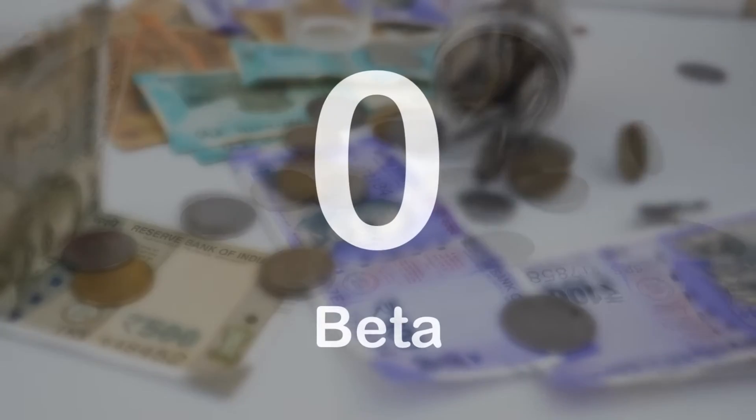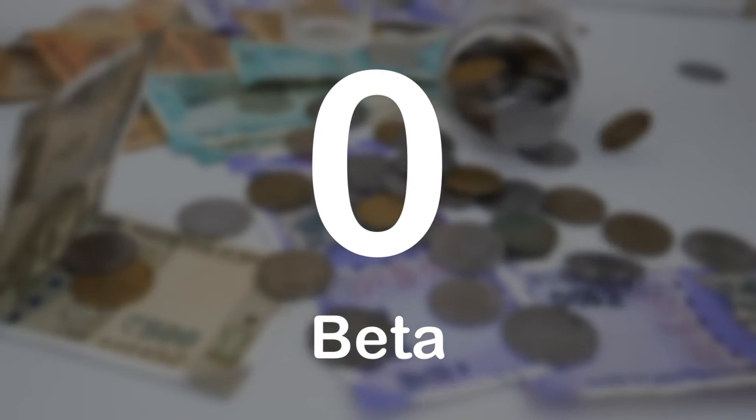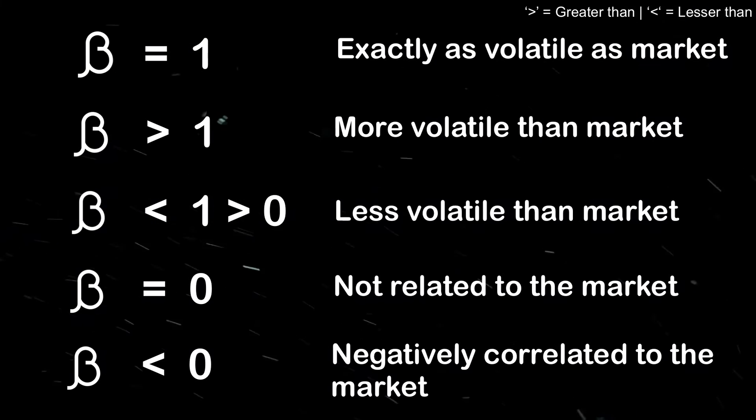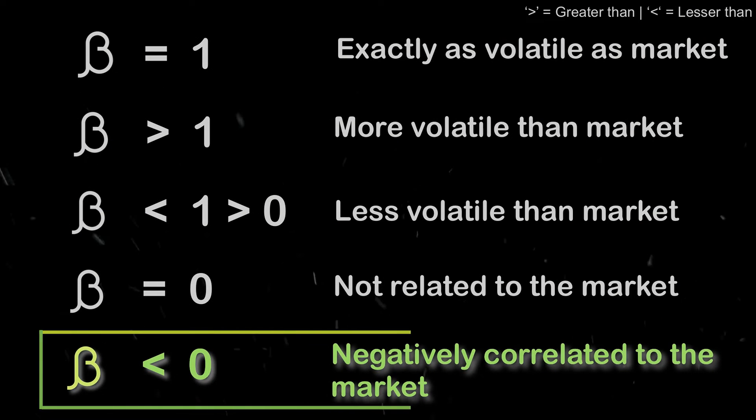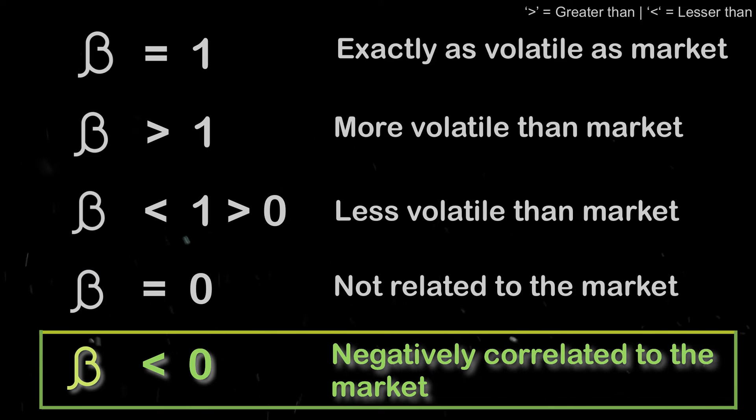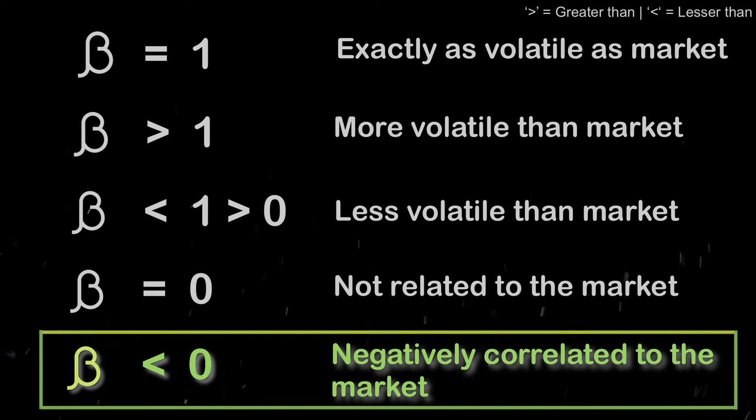Cash has a Beta of 0 because any change in the market index has no bearing on it — if you had 1 lakh rupees in your bank account and the stock market crashed, you would still have 1 lakh rupees, but your investments in equities and mutual funds would surely be affected. Index mutual funds would normally have a Beta of around 1 because their purpose is to track the index. Beta can take any value, and if it is negative, that means it's negatively correlated to the market — if the market went up, that particular investment would go down.